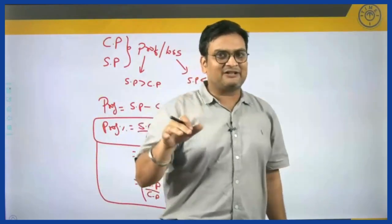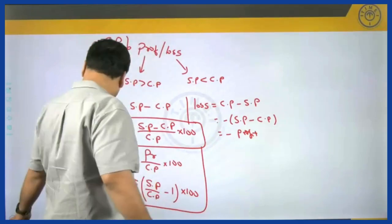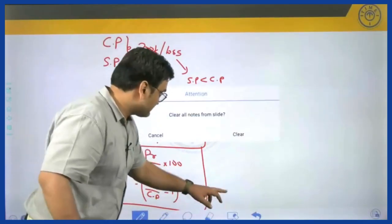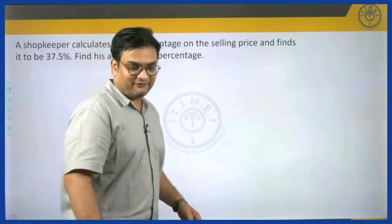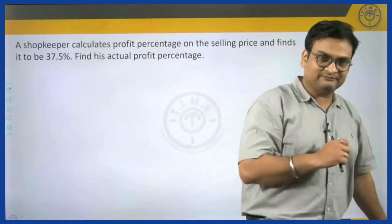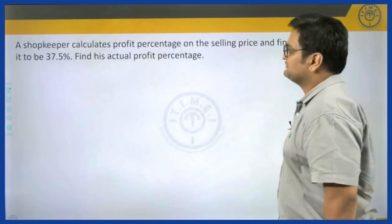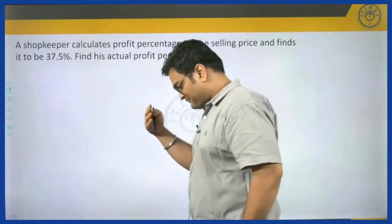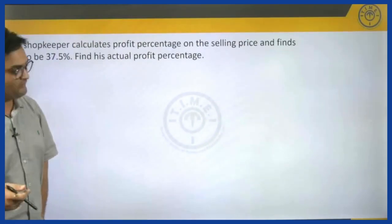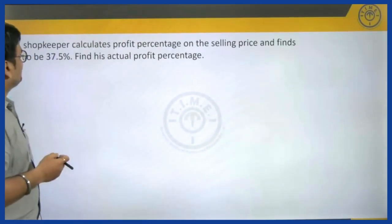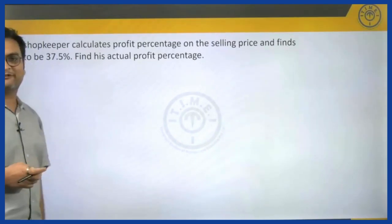This is the basic discussion you should be aware of. Now let us move on to some models of questions under profit and loss. Have a look at this question — pause the video and try it yourself. It says: a shopkeeper calculates his profit percentage on the selling price and finds it to be 37.5. Generally profit percentage is always calculated on CP, not on SP, but here it is calculated on SP and found to be 37.5. Find his actual profit percentage.